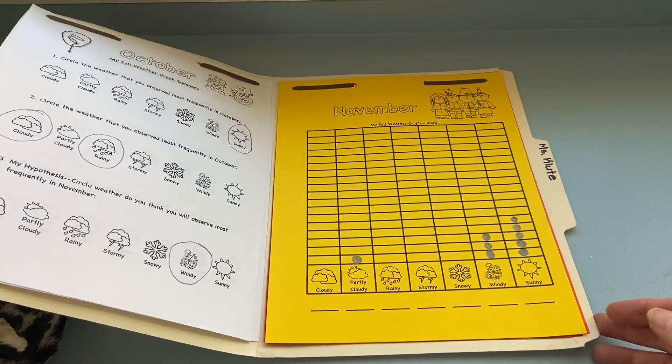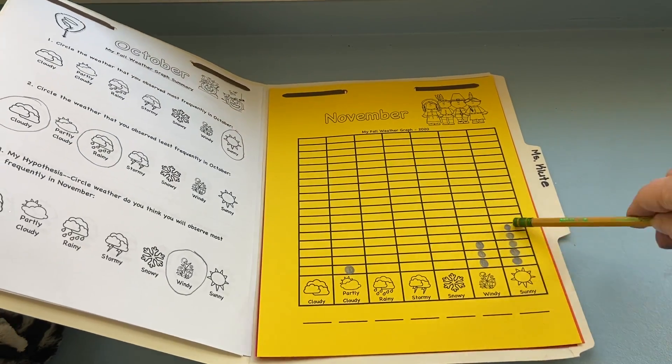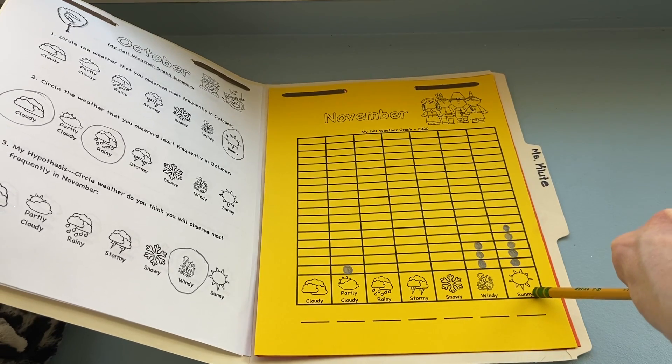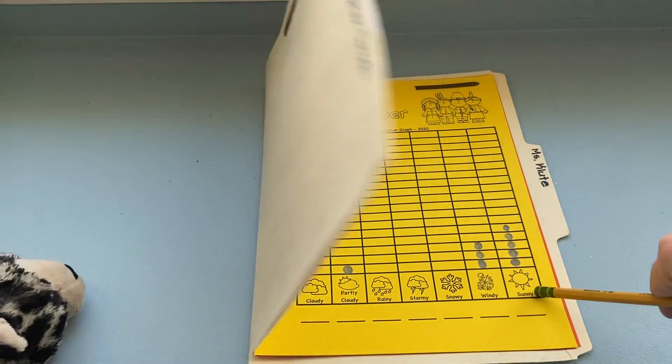comes after you see the lightning. Okay, so I marked one dot on sunny on my chart. So go ahead and look out the window and see what your weather is like today.